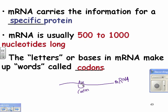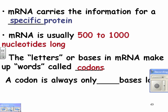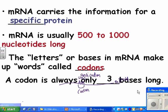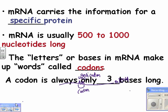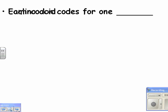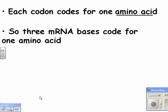The tRNA anticodon matches the mRNA codon — A goes with U, U with A, C with G. The anticodon is on the tRNA and is complementary to the codon. A codon is always only three bases long — it's like saying all words in the DNA language are only three letters long. Each codon codes for one amino acid.